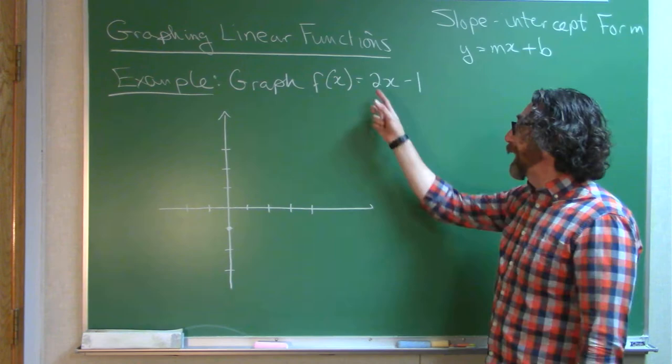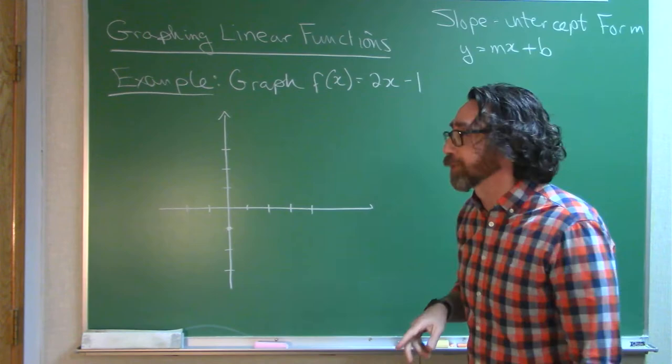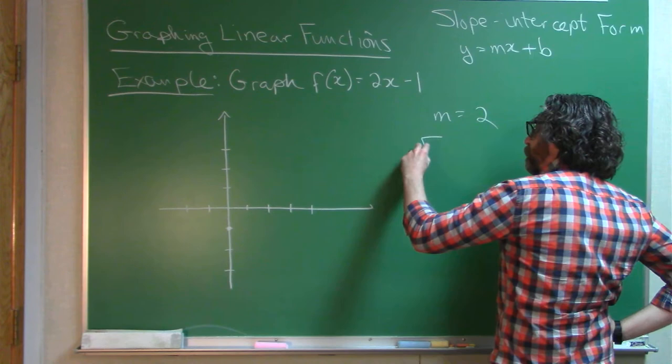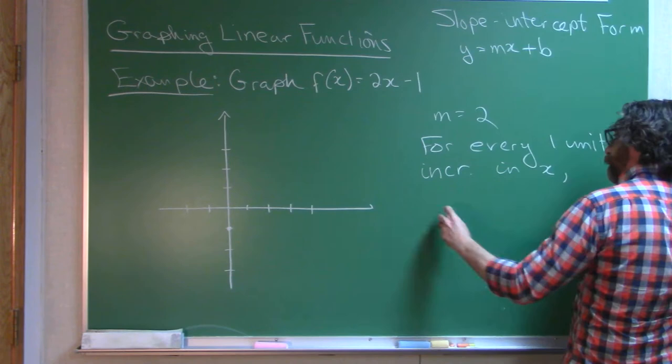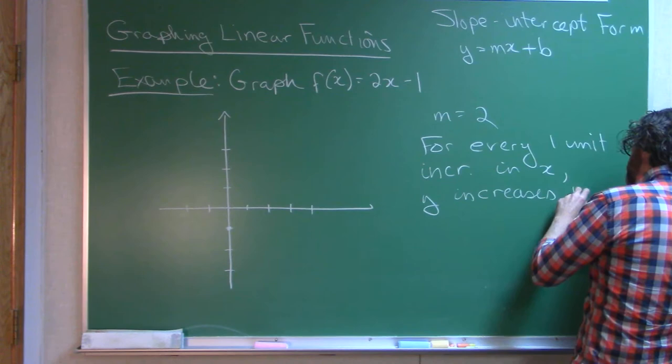The slope tells me how to get additional points on the graph without doing any real computations. So the slope is 2 for this function. For every 1 unit increase in x, y increases by 2 units.